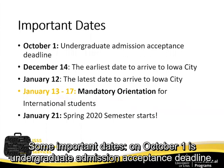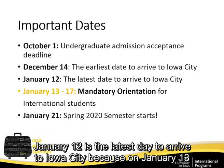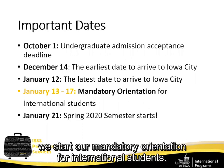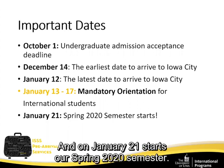Some important dates: October 1st is the undergraduate admission acceptance deadline. December 14th is the earliest date to arrive in Iowa City. January 12th is the latest date to arrive, because January 13th is when mandatory orientation begins for international students — a joint orientation for both undergraduate and graduate students. January 21st is the start of the Spring 2020 semester.